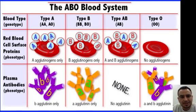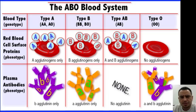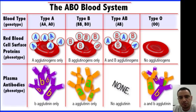All right, students, we're going to talk about blood types today. This is called the ABO blood system. Once I show you this, you're going to hear about which blood type can earn you some money in some cases. You'll also understand blood transfusions and why you just can't donate blood to anyone — you have to have the right match.